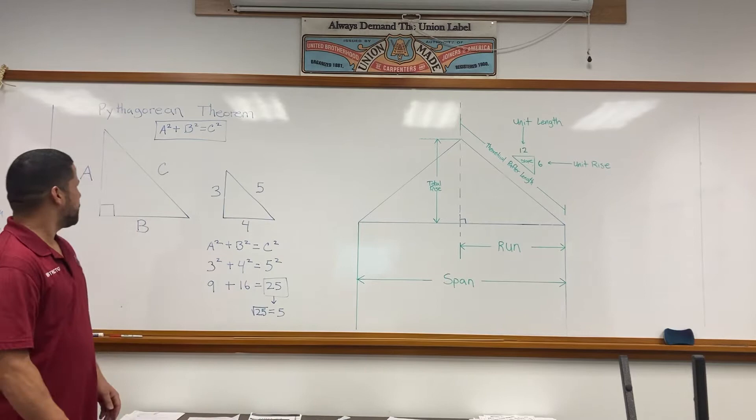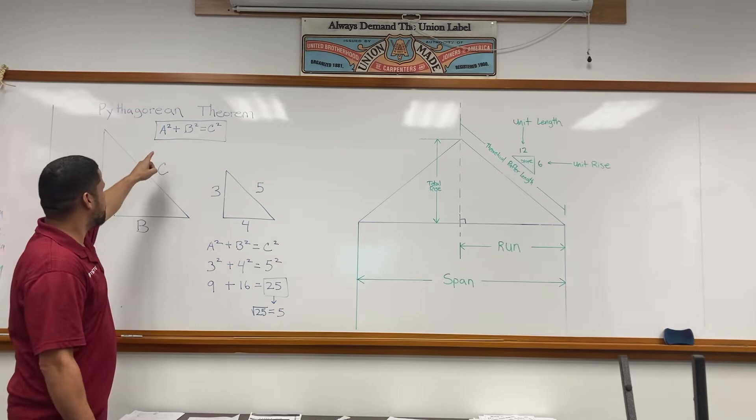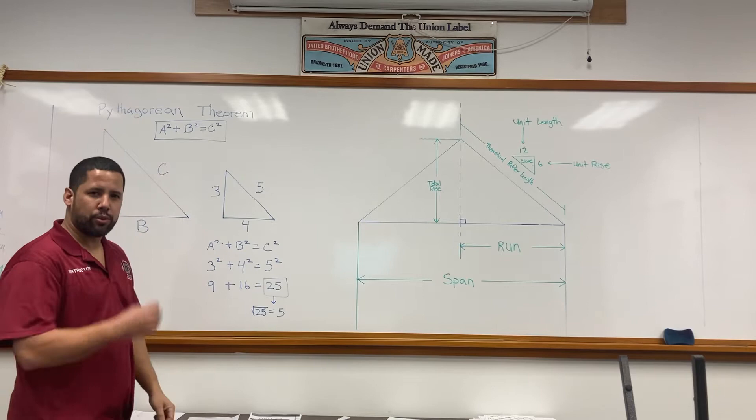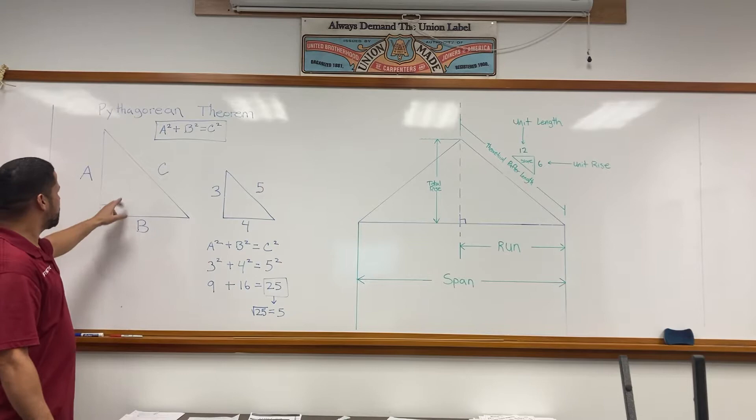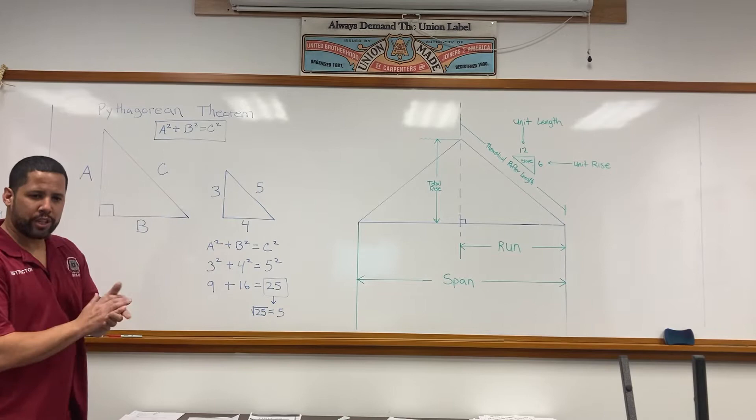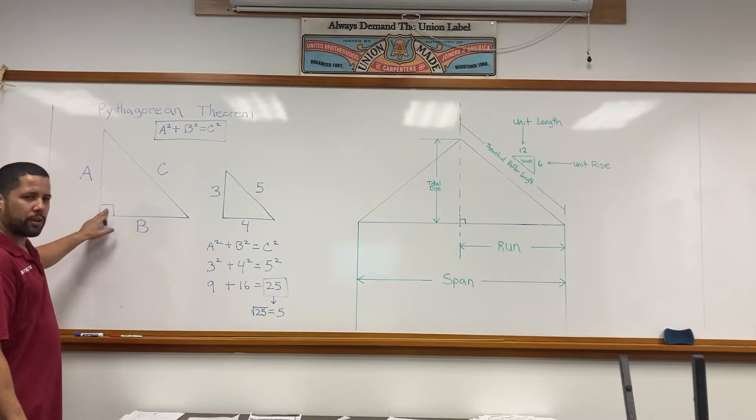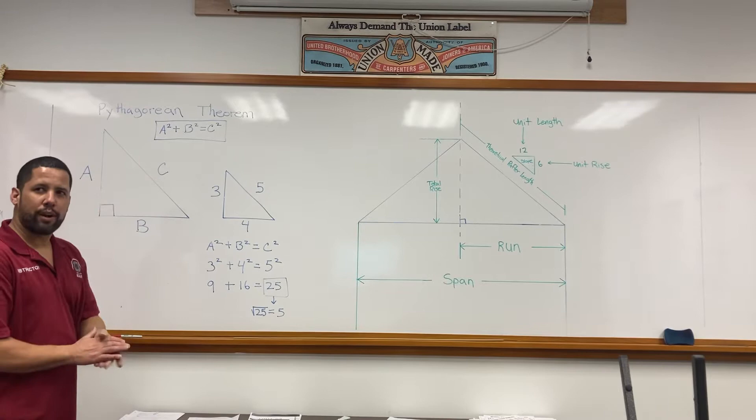First thing that we need to understand is the Pythagorean Theorem. The Pythagorean Theorem states that a² + b² = c². For a right triangle, which we will be using for calculating the length of a rafter, a² + b² = c².